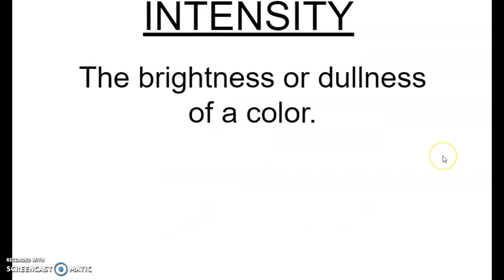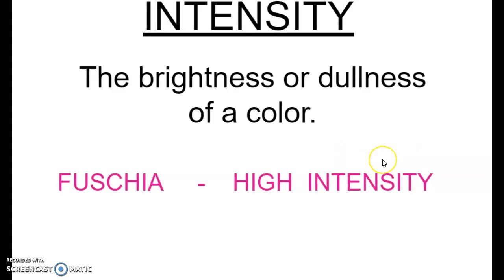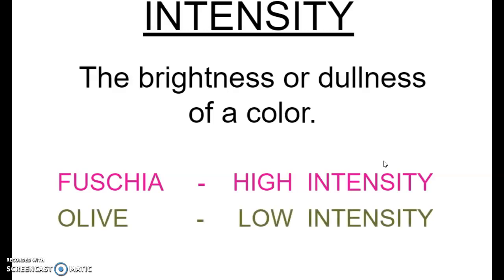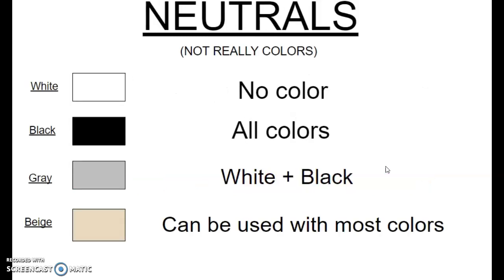Intensity is the brightness or dullness of a color, and we saw this on our painted color wheel when we did yellow and violet. Fuchsia or a bright yellow is high intensity. Olive is low intensity — not as bright. Your neutrals include white, black, gray, and beige, and these are great to use along with the colors you use in a room.